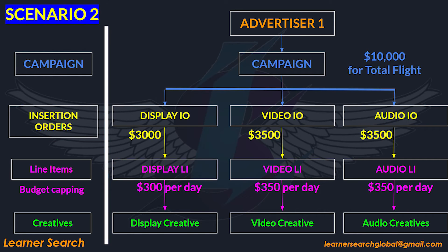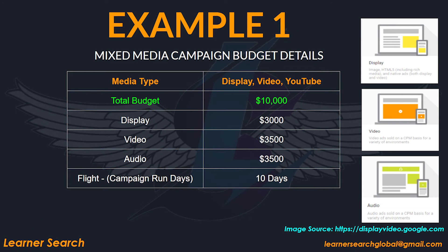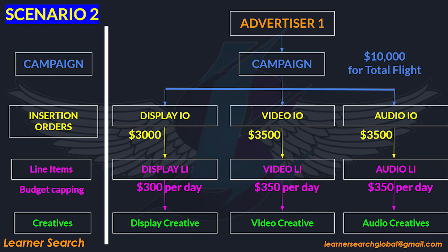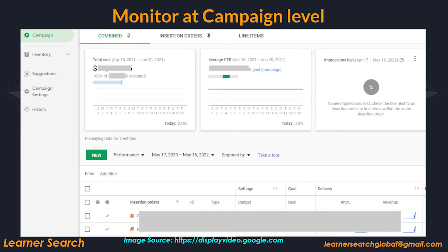Consider another scenario in which you may create all media types in DV360 under a single campaign, which is one of the finest ways to construct the setup according to our reference media plan. In this second scenario, create a single campaign and then proceed with the rest of the setup as in the first scenario. With this campaign setup structure, you can track the delivery of all 3 IOs under the respective campaign while also monitoring the campaign's overall performance. This slide shows a combined view of IOs and line items under a single campaign, where you can monitor delivery and performance of each IO.